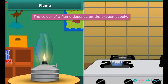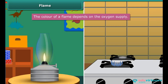When we look at a flame of a kerosene lamp it is yellow in color, but the flame of a kitchen stove is blue. The color of a flame depends on the oxygen supply. If the oxygen supply is less, the flame will appear yellow due to incomplete combustion of fuel. And if it is more, the flame will appear blue due to complete combustion of fuel.